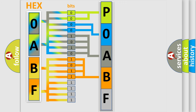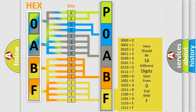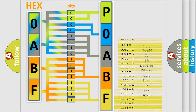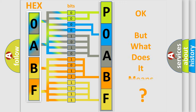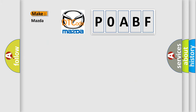A single byte conceals 256 possible combinations. We now know in what way the diagnostic tool translates the received information into a more comprehensible format. The number itself does not make sense to us if we cannot assign information about what it actually expresses. So, what does the diagnostic trouble code P0ABF interpret specifically?